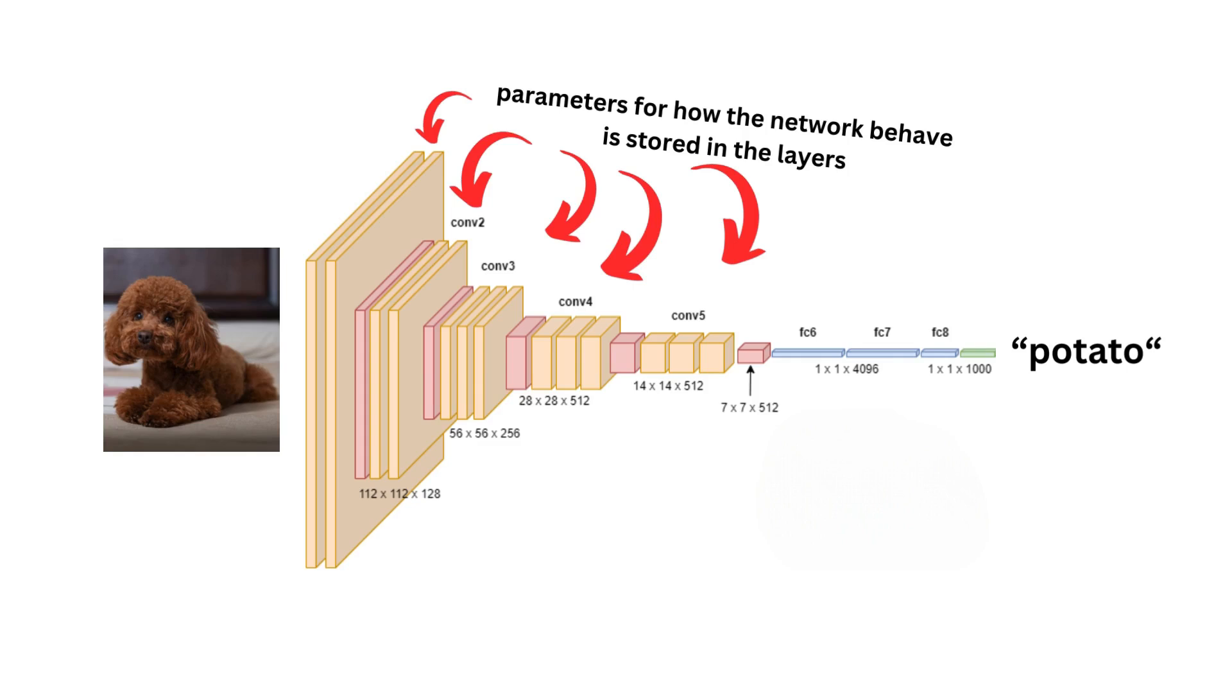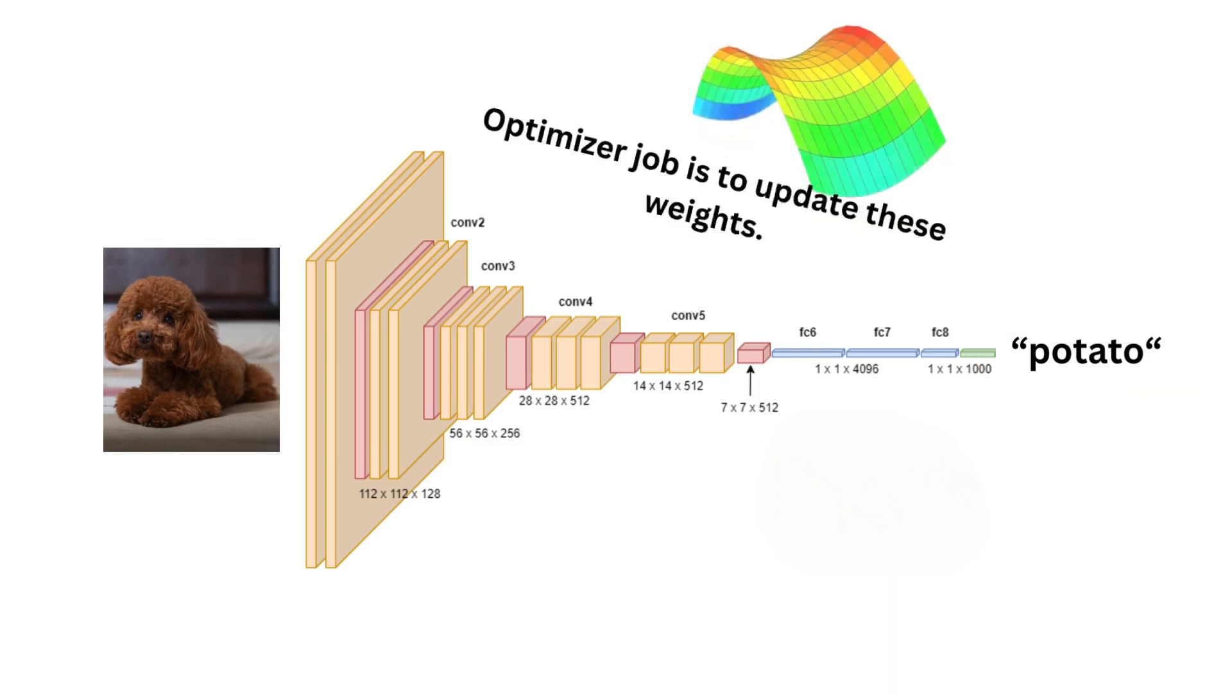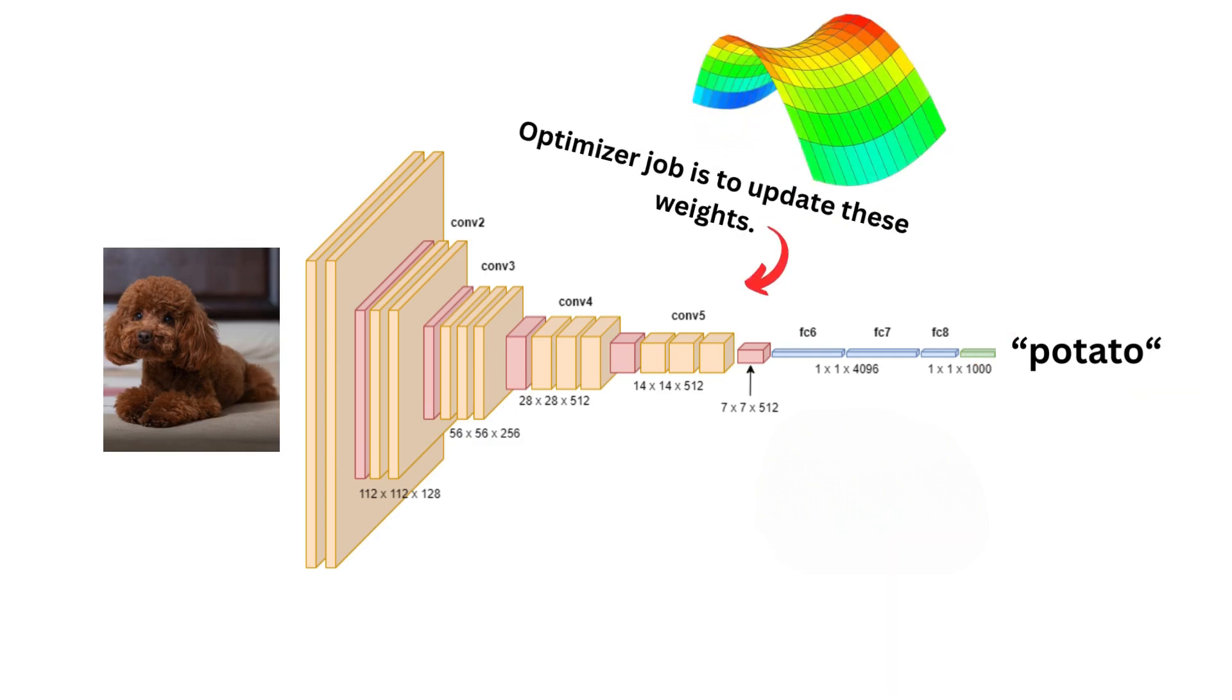The parameters on how the network should respond to the input are stored in each of the sequential layers. When you first start to train, the parameters are very close to random and the network doesn't know much - it's mainly taking guesses. The role of the optimizer is to update these weights or parameters so that the network goes from random guesses to accurate guesses.